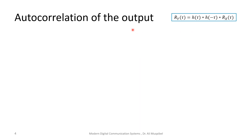Now we want something more — not just the mean of the output, but also the autocorrelation of the output. To cut it short, the autocorrelation of the output will be the same as the autocorrelation of the input convolved twice: once with h(t) and once with h(−t). If you're interested in the derivation, we start with the definition of the autocorrelation of the output — the expected value of the output at two different time instances t and u.